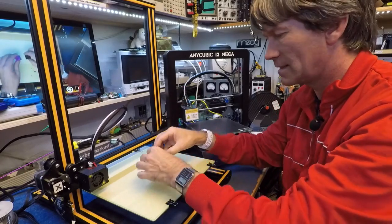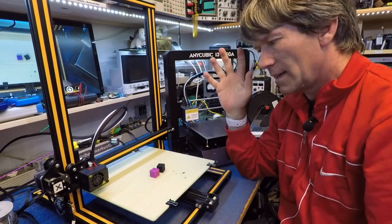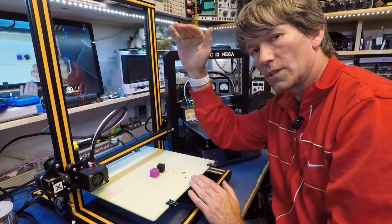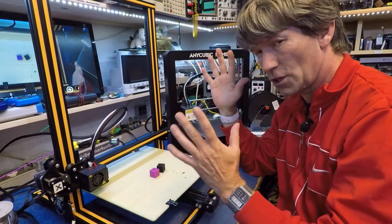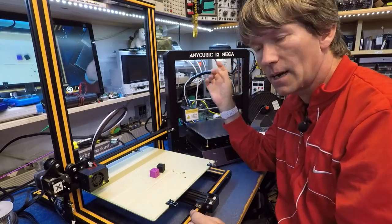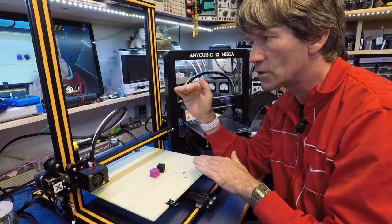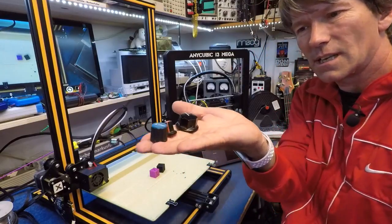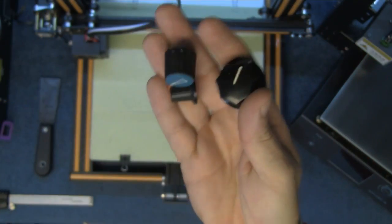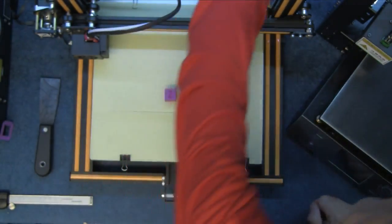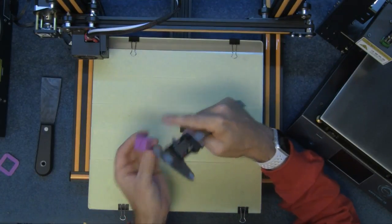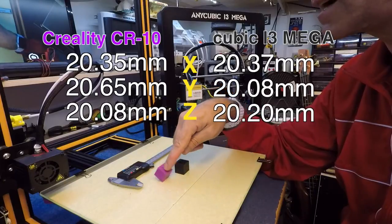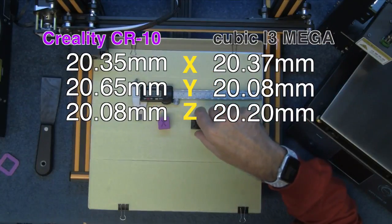Now the Creality CR-10 is 300 by 300 by 400. That's the print area which is huge really. And the Anycubic i3 Mega is 210 by 210 by 205 millimeters tall. So yeah it's a lot smaller, but I'm only really interested in making things like this: volume caps, knob caps and things. These are supposed to be 20 millimeters by 20 millimeters square. It's close, it's so close. What do I do? Do I keep the Creality or do I keep the i3 Mega?